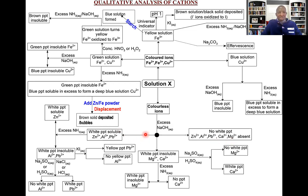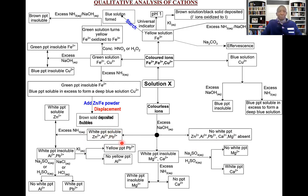If on adding sodium hydroxide you get a white precipitate which is soluble in excess, then zinc, aluminium, or lead ions are present. To differentiate, add excess aqueous ammonia: a white precipitate soluble in excess indicates zinc; a white precipitate insoluble in excess indicates aluminium or lead.